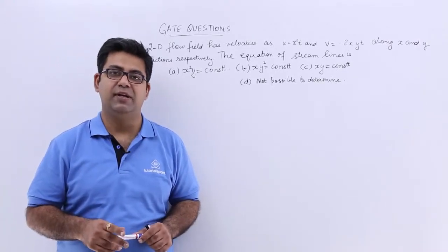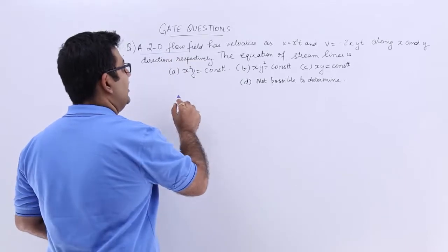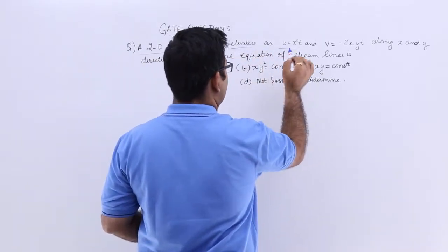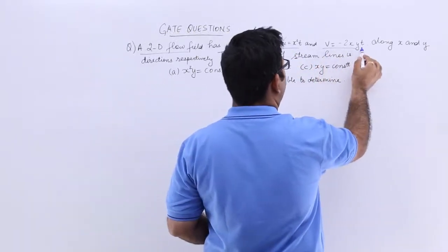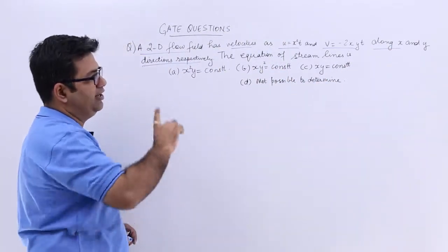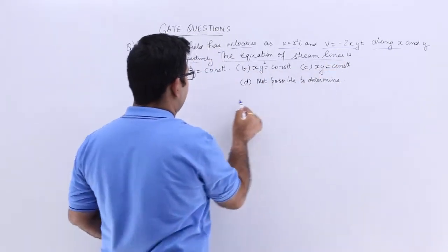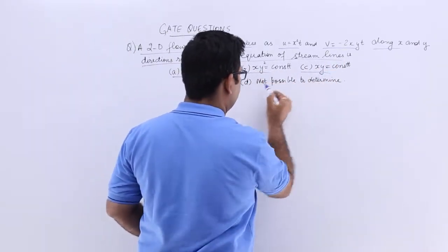Now let's come to question number 6. Question number 6 is we have a 2D flow field which has velocities as x squared t and minus 2xy t along x and y directions respectively, where t is the time. What is the equation of the streamline? So these are the four options given to us.